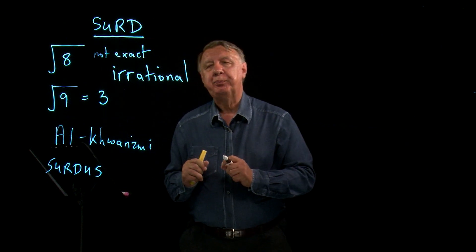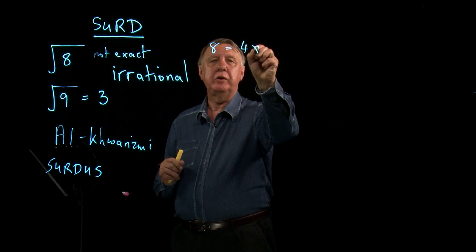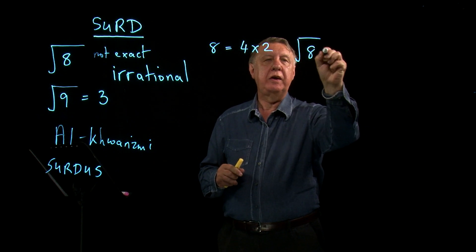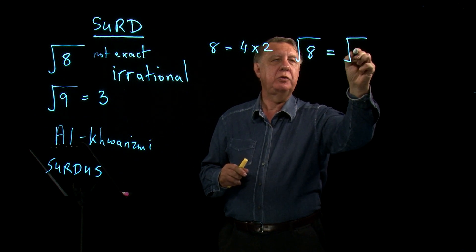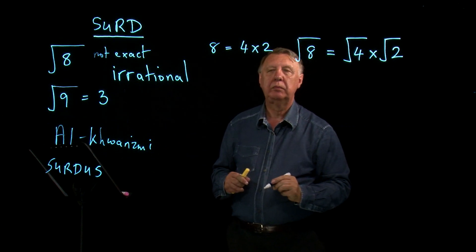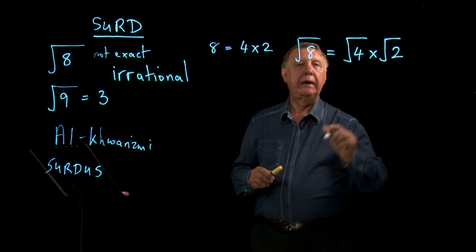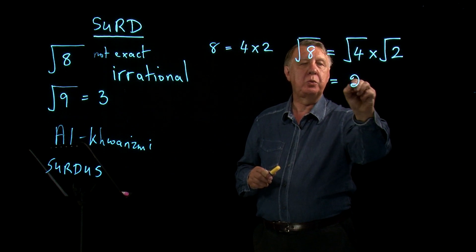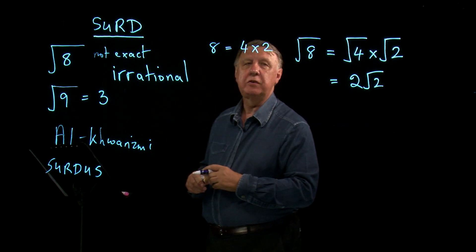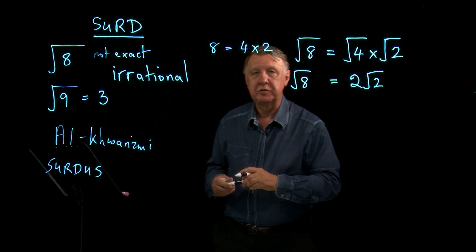It can be simplified. We know that 8 is equal to 4 times 2. So the square root of 8 is the same as the square root of 4 times the square root of 2. The square root of 4 is, of course, exact. It is a rational number. And so that's twice the square root of 2. So we can write the square root of 8 as equal to 2 times the square root of 2.